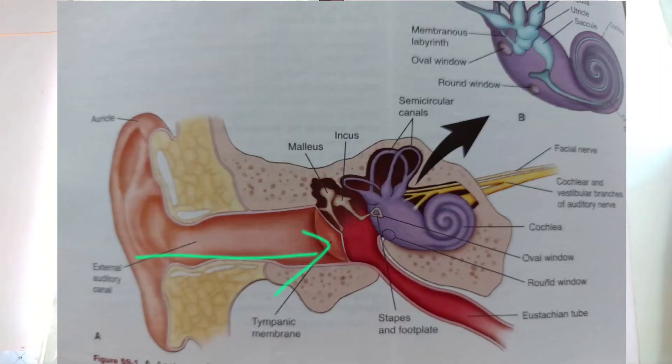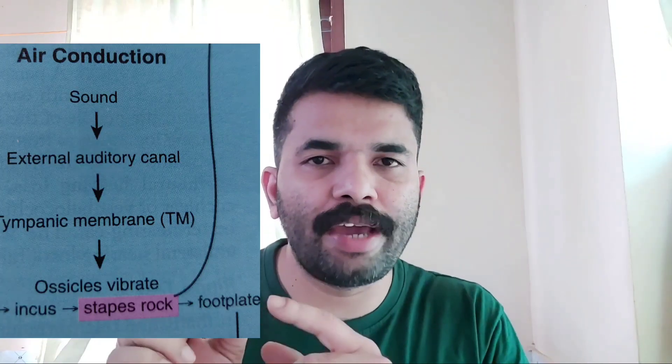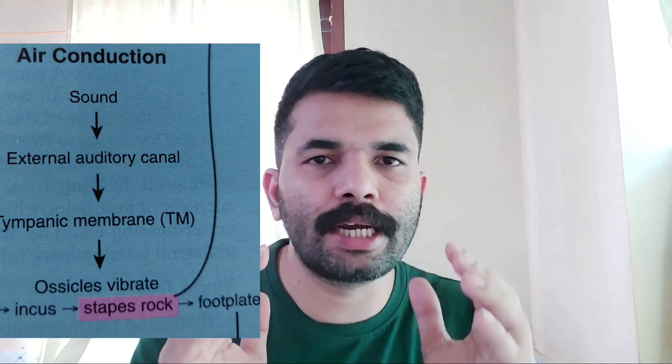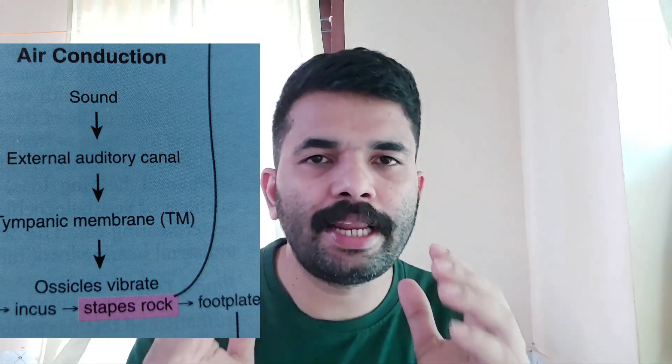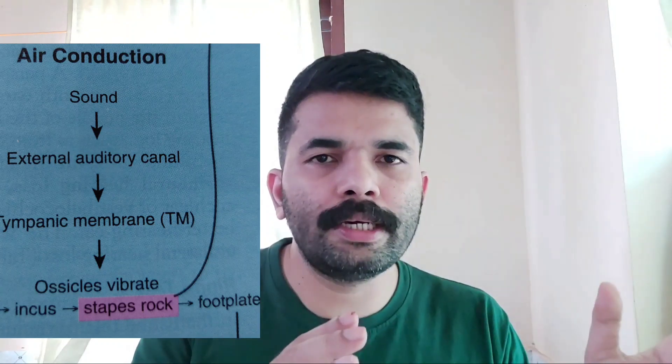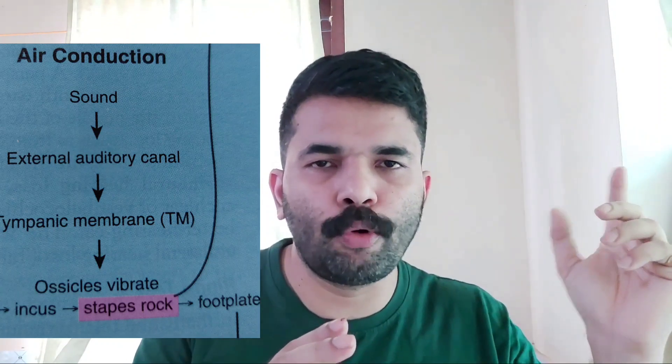We can understand air conduction and bone conduction with an example. In air conduction, sound enters through the external ear canal, travels to the tympanic membrane, then through the ossicles in the middle ear — malleus, incus, and stapes — which are very near the inner ear, connecting to the nerve.